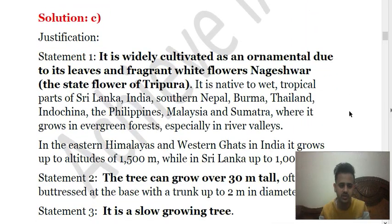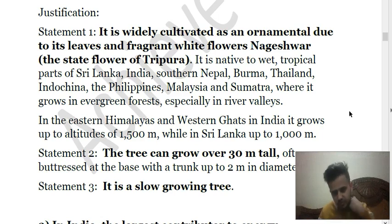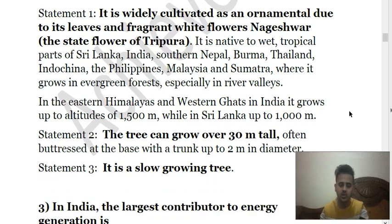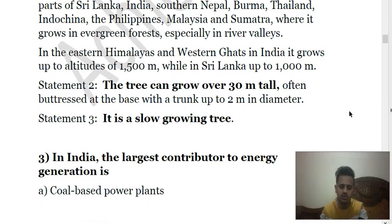Here is the explanation. Indian rose chestnut is widely cultivated as an ornamental due to its leaves and fragrant white flowers. It is native to wet tropical parts of Sri Lanka, India, Southern Nepal, Burma, Thailand, Indochina, Philippines, Malaysia, and Sumatra, where it grows in evergreen forests, especially in river valleys. It can grow over 30 meters tall with a trunk up to two meters in diameter. Statement three is also wrong — it is a slow-growing tree.